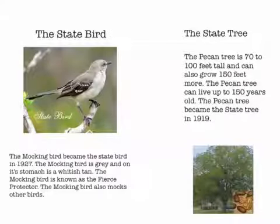The state bird. The mockingbird became the state bird in 1927. The mockingbird is gray and on its stomach is a whitish tan. The mockingbird is known as the fierce protector and also mocks other birds.